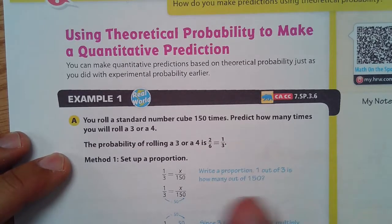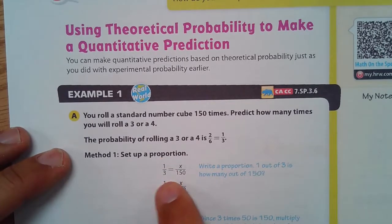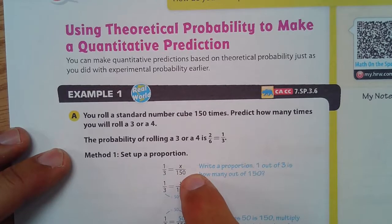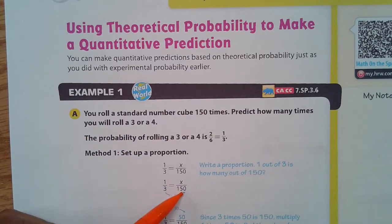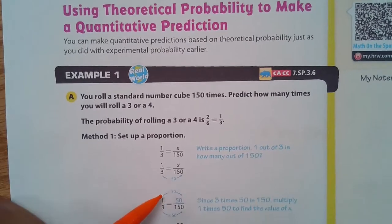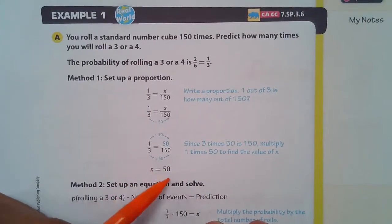So we'll set up a proportion. Using that one-third, one out of three is how many times, so it can happen theoretically one time out of three times when you roll a three or four, so how many times would it happen out of 150? What you could do is you could see that three times 50 is 150, so you have to multiply one times 50 is 50. So that is our answer, 50 times out of 150, so x is 50.